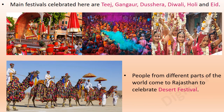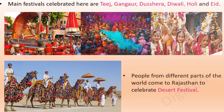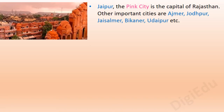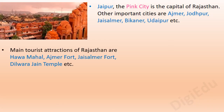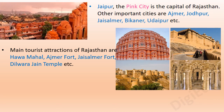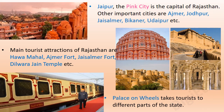People from different parts of the world come to Rajasthan to celebrate the desert festival. Jaipur, the pink city, is the capital of Rajasthan. Other important cities are Ajmer, Jodhpur, Jaisalmer, Bikaner, Udaipur, etc. Main tourist attractions of Rajasthan are Hawa Mahal, Ajmer Fort, Jaisalmer Fort, Dilwara Jain Temple, etc. Palace on Wheels takes tourists to different parts of the state.